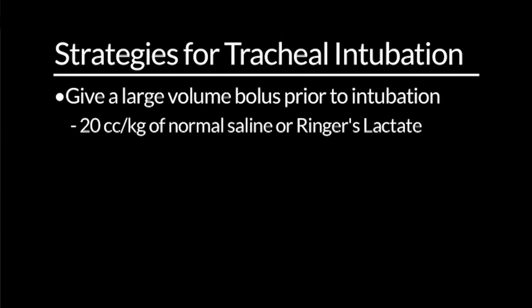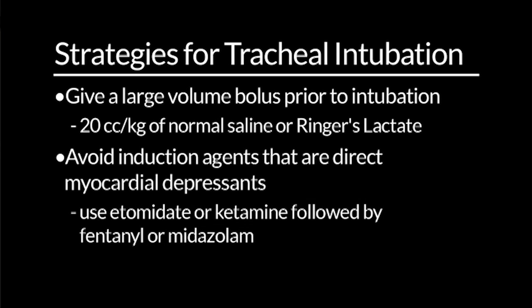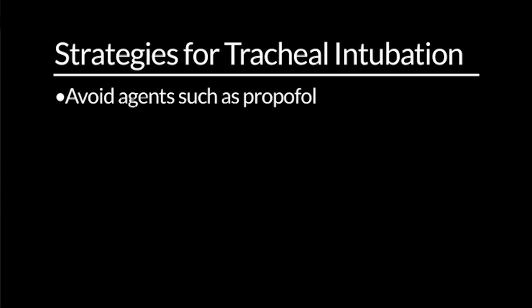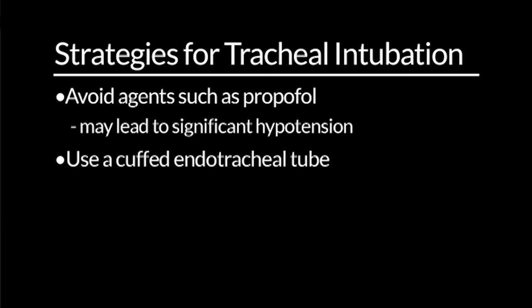For intubation strategies: given decreased preload, we should consider giving a large volume bolus of 20 cc per kg of normal saline or Ringer's lactate prior to intubation. We should avoid induction agents that are direct myocardial depressants. We typically use etomidate or ketamine, followed by a small amount of fentanyl or midazolam, and avoid propofol as it may cause significant hypotension. We should use a cuffed endotracheal tube, as we may need to apply higher mean airway pressures during ventilation. At Children's Hospital, we use cuffed endotracheal tubes as small as 3.5.